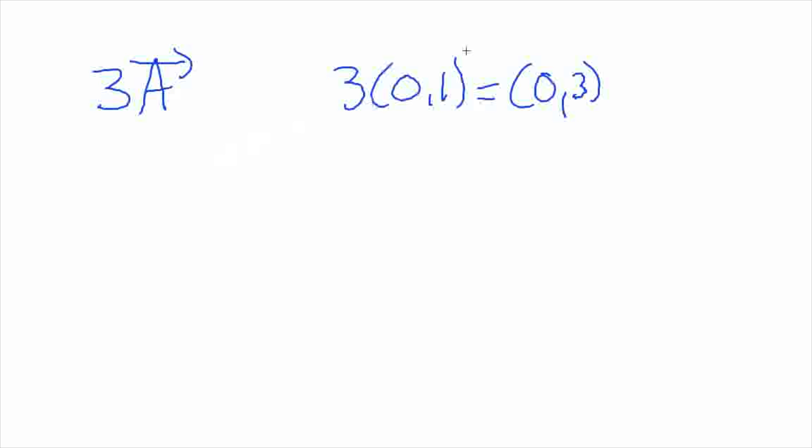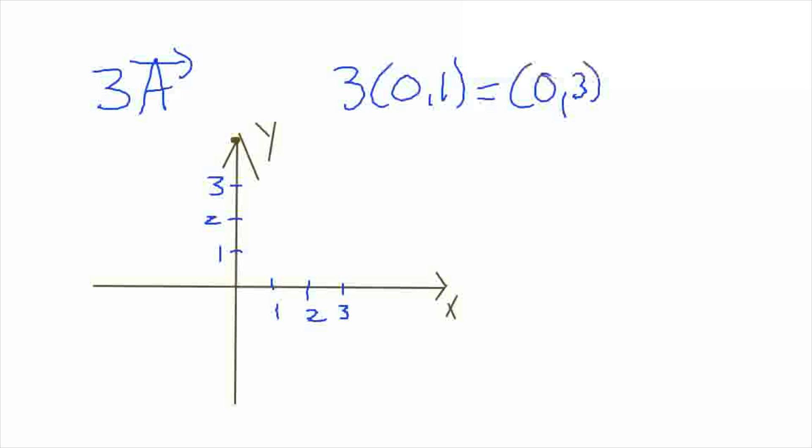So, we start out at 0, comma 1. So, here's vector A.